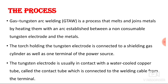Gas tungsten arc welding is a process that melts and joins the metal by heating them with an arc established between a non-consumable tungsten electrode and the metal. A non-consumable tungsten electrode is used and the arc is generated between the electrode and the workpiece. As the arc is generated, heat gets developed and because of that heat, the metal we want to join gets melted and fused together.